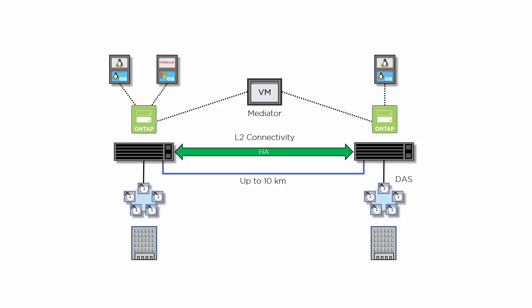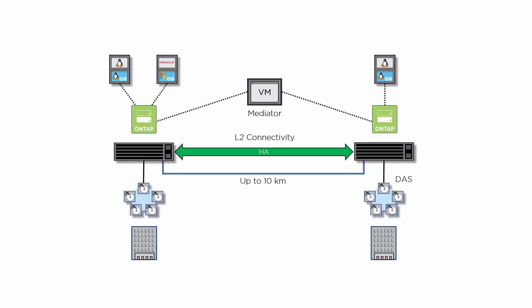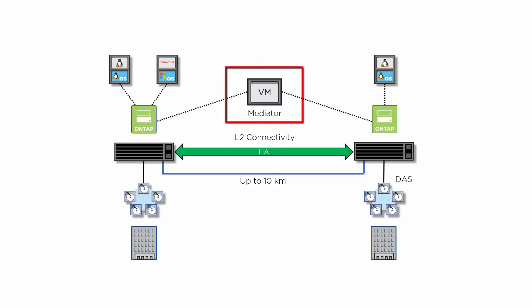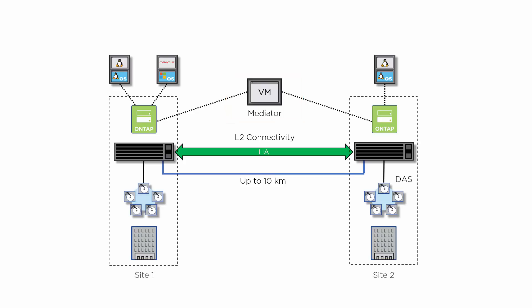MetroCluster SDS builds upon your standard networking infrastructure, supporting two ONTAP select nodes connected via gigabit ethernet or 10 gigabit ethernet in an active-active configuration. MetroCluster SDS requires layer 2 inter-node connectivity and a premium ONTAP select license. A mediator is required to identify the active node during a failover and avoid scenarios where both nodes remain active independently during normal operation. To ensure proper data protection and failover during a total failure of a node site, the mediator should be in a different location than either node in the high availability pair.